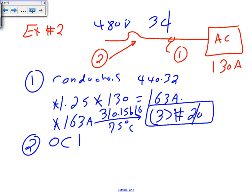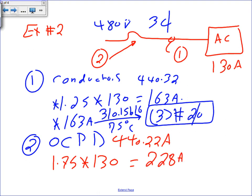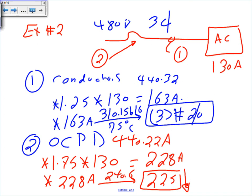Number two, overcurrent protection device. The same thing, the article is 440.22A. So 1.75 multiplied by 130, and that equals 228 amps. Then take this 228 amps to 240.6. What's your next standard down? 225. You go down. 225.